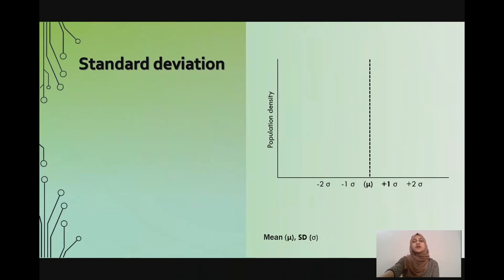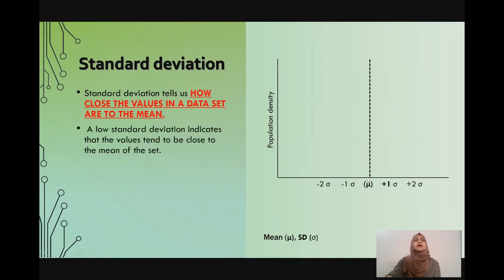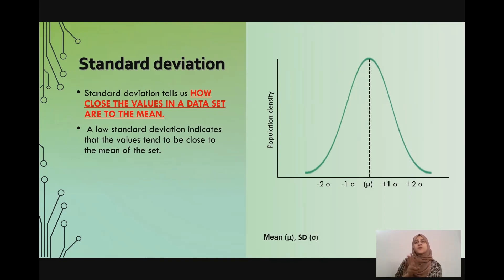Let's begin with standard deviation. Standard deviation tells us how close values in a data set are to the mean. If you look at this curve on the right side, we have the x-axis whereon we have plotted our mean, denoted by mu, and standard deviation on either side, denoted by sigma. On the y-axis we have the population density, and we will be plotting our values along the mean. So if we have a low standard deviation, this indicates that the values tend to be close to the mean of the set. Notice the shape of the curve — it is elongated, dense, and concentrated around the mean.